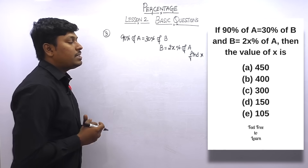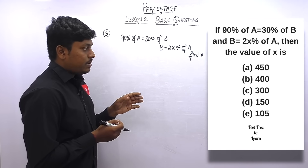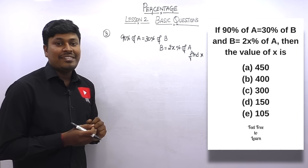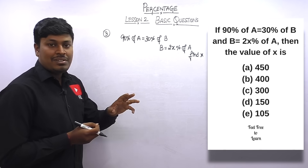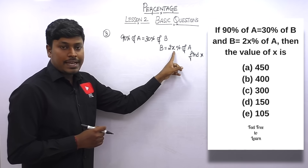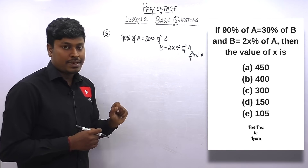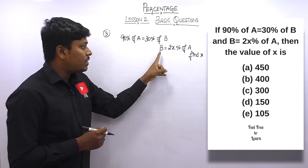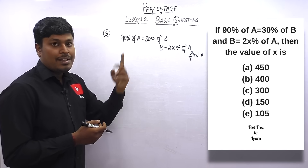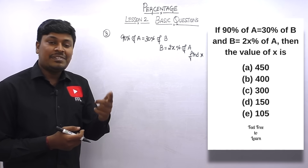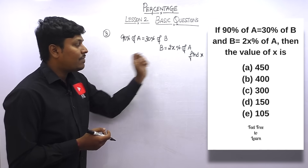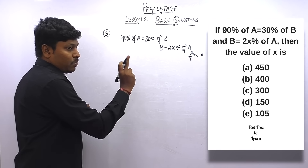Question number three: if 90% of a = 30% of b, and b = 2x% of a, find x. This is similar to question 1. We need to eliminate a and b. Using expression 1, we find the value of a, then substitute into expression 2 to find x.